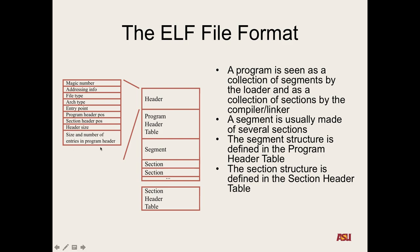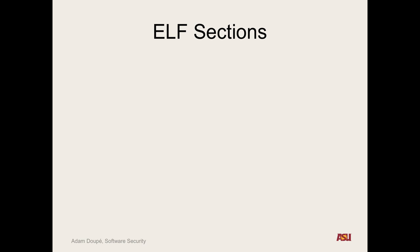The header also contains the size and number of program header entries so you can read the program header table, and the size and number of entries in the section header. The segment header table specifies all the information — for example, segment 0 should be placed at address 0x08001 and is executable, while segment 2 should be at 0x10 and is read-only data.